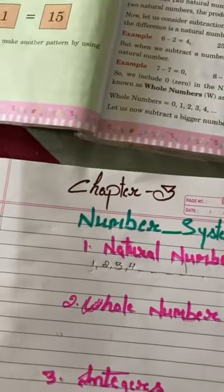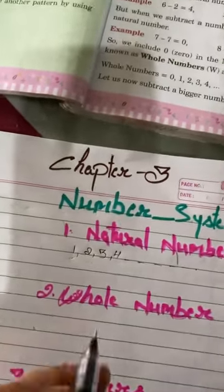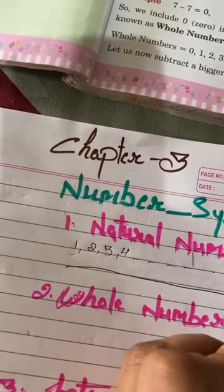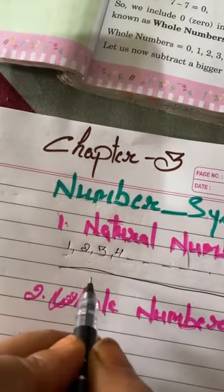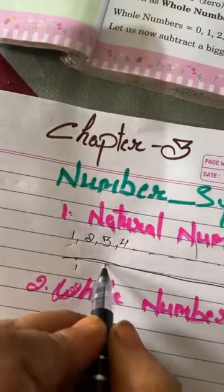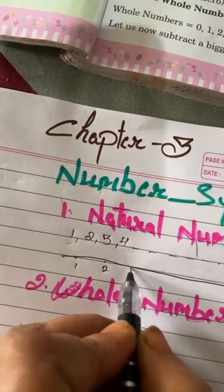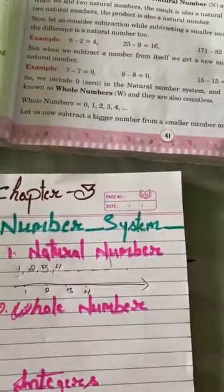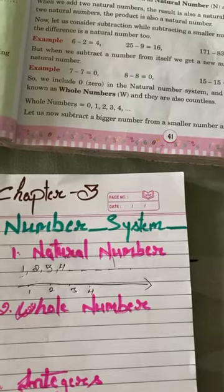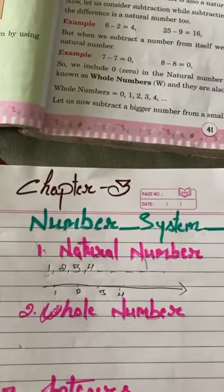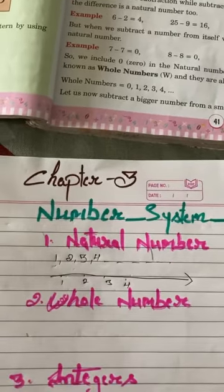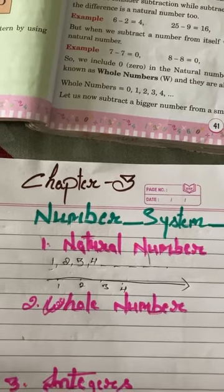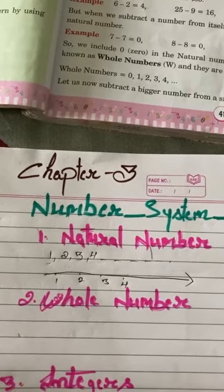We show all these natural numbers on a number line with a ring. Like 1, 2, 3, 4. So we express or show these natural numbers with a number line.